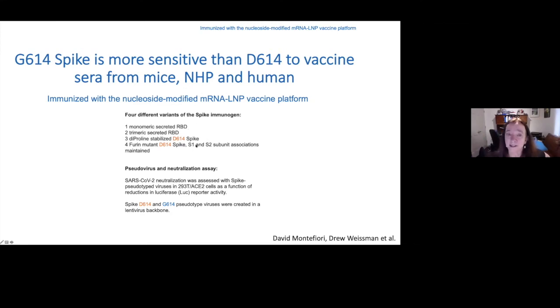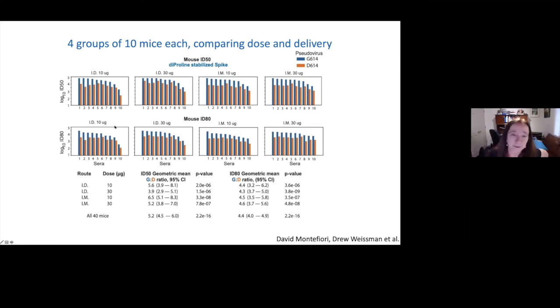So Drew Weissman and David Montefiore really have led this and I just helped them out a little bit with the analysis and figures, but we're finding that there is a marked increase in susceptibility to neutralization in viruses that have the mutation. So the first thing they looked at was vaccine sera, and Drew was using four different variants of spike. Some of them were just RBD and some of them were full spike. And he tested these in mice and in humanized mice and in primates. And then David tested and compared the two different forms in a pseudotype assay. These are now four groups of mice. Drew is trying to compare dose and delivery strategies. So it's ID versus IM, 10 micrograms versus 30 for the four different groups. These are 10 mice, 10 mice, and here's the paired. This is the G614 and here's the original Wuhan form. And you can see that there is a higher ID50 and higher ID50 means more sensitive, in every single mouse, every one of these 40 mice, and it's highly significant. This is a log scale. So the effect is about across all 40 mice about a five fold effect.